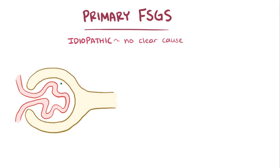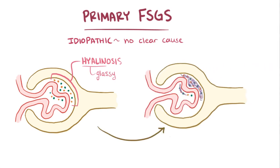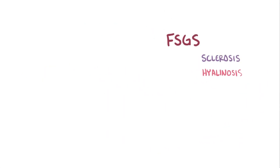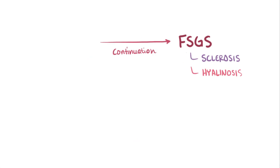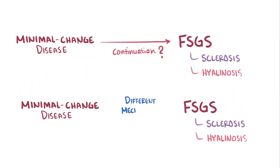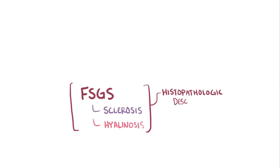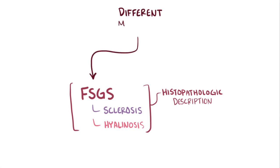Not only that, over time some of these proteins and lipids get trapped and build up in the glomerulus, resulting in hyalinosis, where the tissue has a hyaline or glassy appearance on histology, and it's thought that over time these areas move on to develop sclerosis, or scar tissue. Some research suggests that these changes in FSGS are a continuation from another nephrotic syndrome called minimal change disease, which is also characterized by podocyte injury. Other research suggests that minimal change disease and FSGS have different mechanisms of podocyte injury. Fundamentally, FSGS is a histopathologic description — basically what it looks like under a microscope — which could be the end result of a number of different pathophysiologic mechanisms.